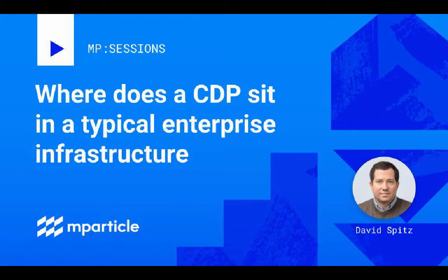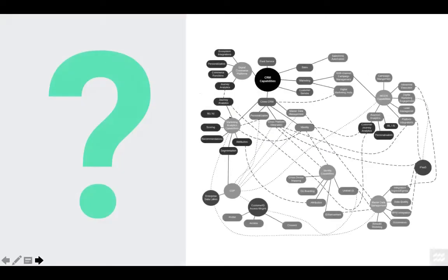Today we're talking about the question of where a CDP sits in the enterprise architecture of a large brand already operating with multiple customer-level databases. It's based on an interview I conducted with Justin McManus, Particle's Head of Solutions Engineering, in July 2018. Marketers, of course, use a variety of systems to design, orchestrate, and measure customer experiences. Many of these manage customer-level data of one kind or another, as well as integrate with other vendor platforms. So where does a CDP sit in all this?